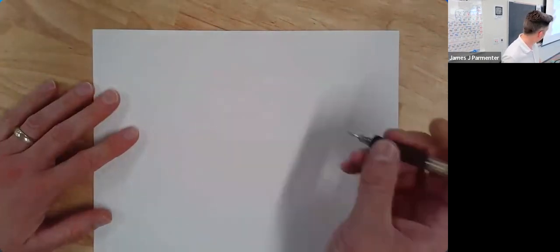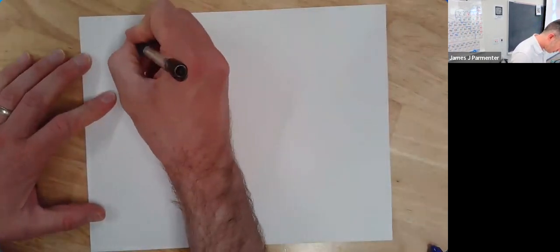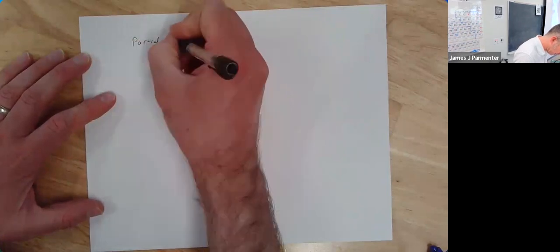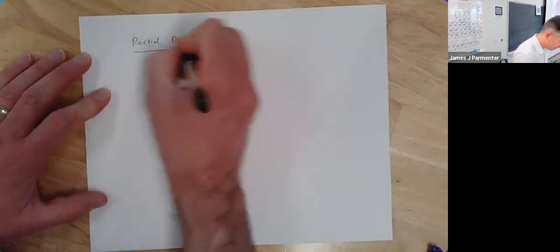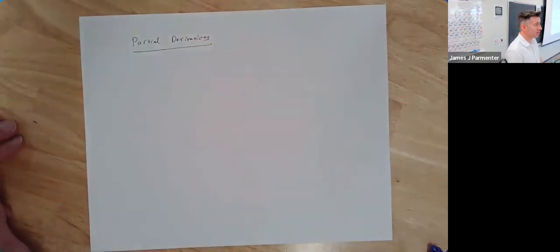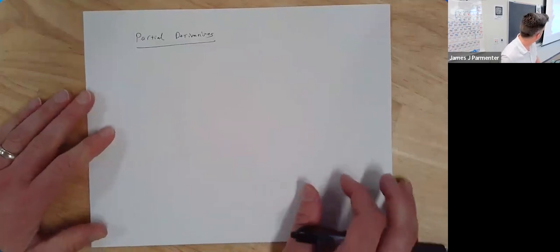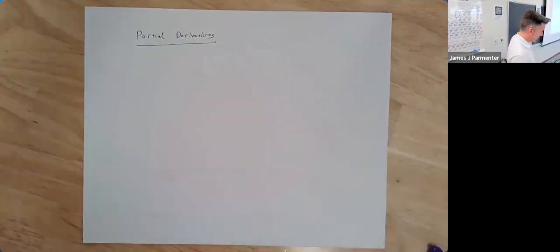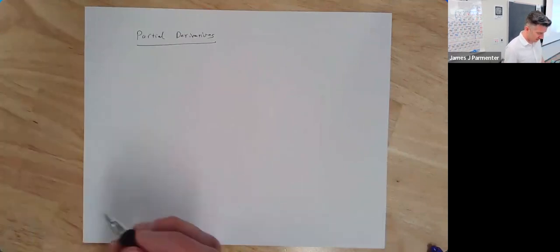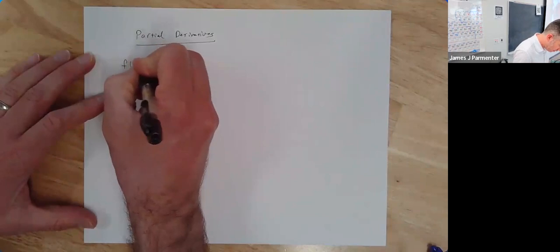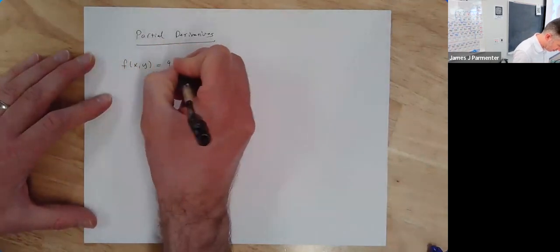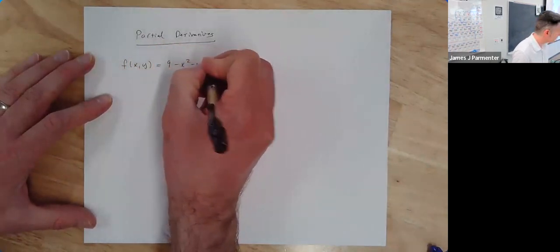Let's talk about partial derivatives, which, although they might sound challenging, they are not. If you know how to find a regular derivative, you know how to find a partial derivative — you just don't know you know it yet. I like to talk about this in the context of what they actually mean. Let's draw one of my favorite three-dimensional surfaces: an upside-down paraboloid, f(x,y) equal to 9 minus x squared minus y squared.